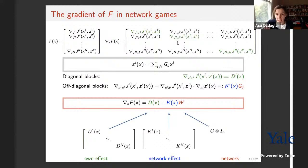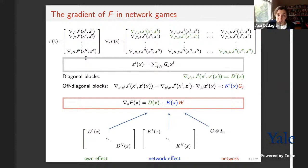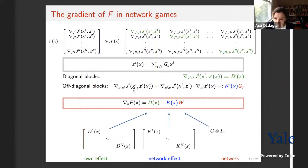Now let me explain what makes network games special, enabling tractable analysis with the VI approach. Looking at F and its Jacobian: F was the gradient of payoff functions with respect to x, and taking another gradient gives the Hessian blocks — ∂²J_i / ∂x_i ∂x_i on the diagonal (which I call D_i) and ∂²J_i / ∂x_i ∂x_j as off-diagonal blocks. The key is the network game structure: since J_i depends on x_i and the local aggregate z_i, the cross-partial ∂²J_i / ∂x_i ∂x_j by chain rule equals ∂²J_i / ∂x_i ∂z_i * G_{ij}.